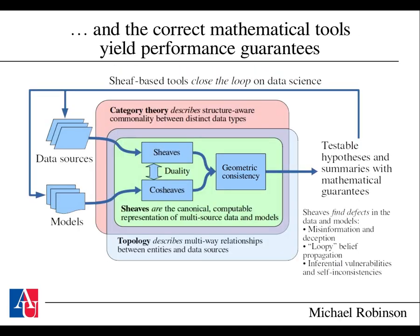Once you have a diagrammatic framework and the correct mathematical tools for working with them, you can obtain performance guarantees, mathematical proofs, and testable hypotheses that can be tested with statistics — providing provable statements about the validity of your models and how good your data happened to be. This works because category theory describes the structural commonality between different kinds of data types. Topology describes the multi-way relationships, and given these together, sheaves are the canonical computable representation of multi-source data and models. In fact, that's a theorem.